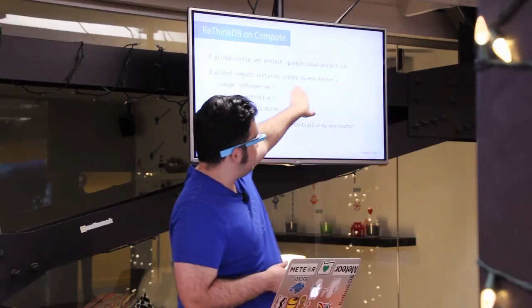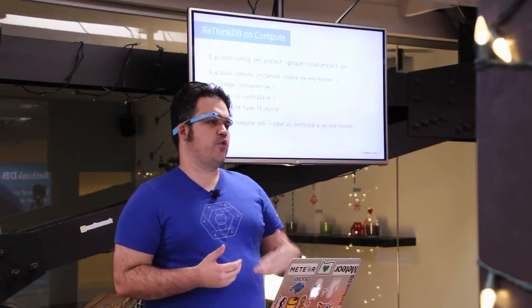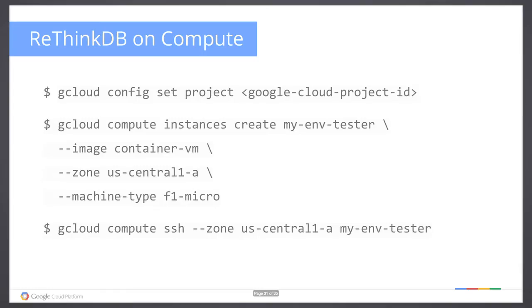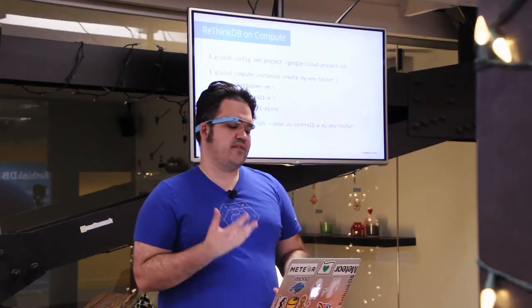You can use the gcloud SDK, available for pretty much every platform. You can also do this through the Google Cloud console where you manage your project, create a VM instance, and use secure shell through Chrome — it gives you a terminal window. So if you don't want to set up the gcloud SDK and deal with configure set project, you can fire up the instance and use it there instead.